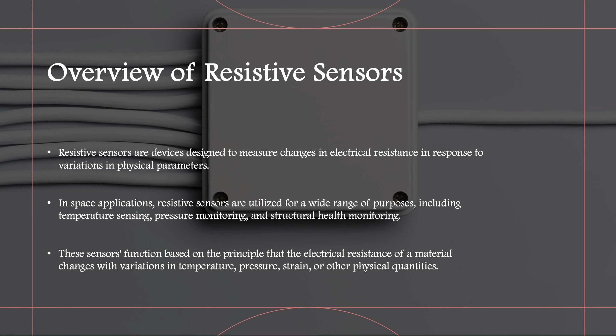Overview of resistive sensors. Let's begin by understanding resistive sensors. These devices are designed to measure changes in electrical resistance in response to variations in physical parameters. In the context of space exploration, resistive sensors serve various purposes, including temperature sensing, pressure monitoring, and structural health monitoring.